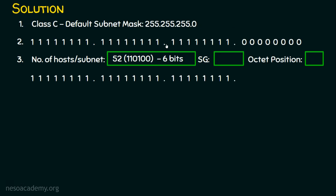In the fourth octet there are eight bits, and we reserve six zeros from the right, filling the remaining places with ones. This gives a valid subnet mask since ones are continuous. Moving from right to left, the bit positions are 2⁰=1, 2¹=2, 2²=4, 2³=8, 2⁴=16, 2⁵=32, 2⁶=64. The first one encountered moving right to left has a decimal value of 64, so the subnet generator is 64.